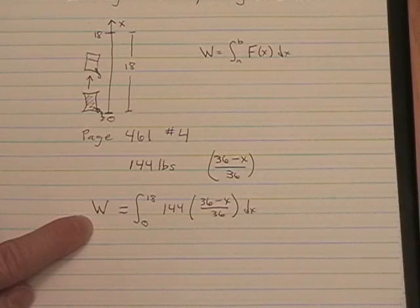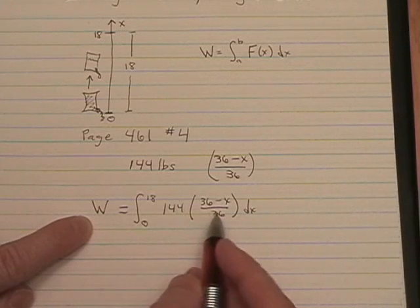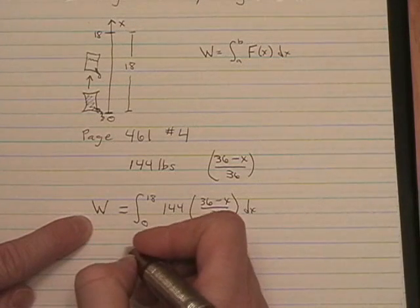And so let's go ahead and do this integral. Now as it turns out, 36 goes into 144 four times. So I'm going to factor the 4 out.